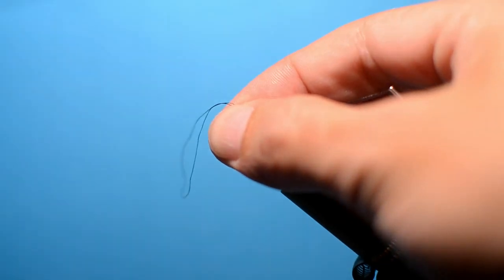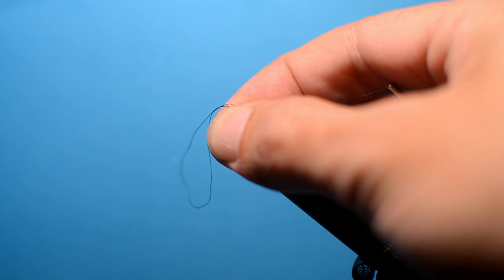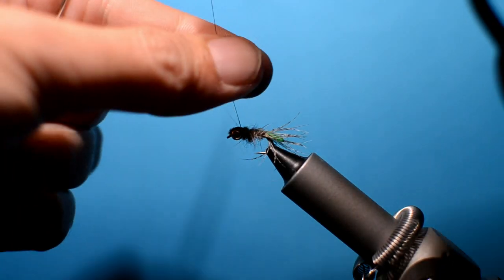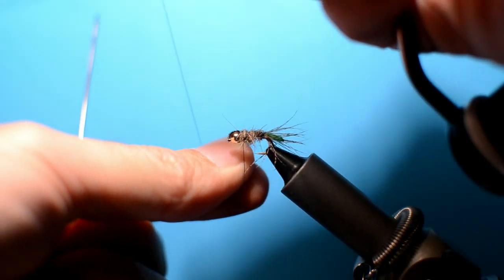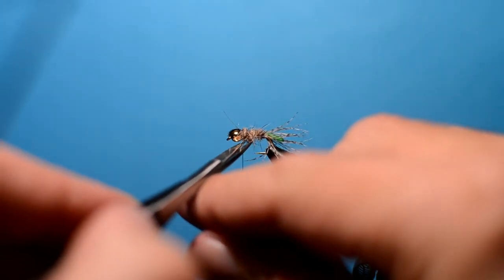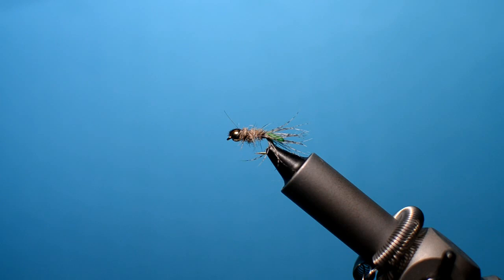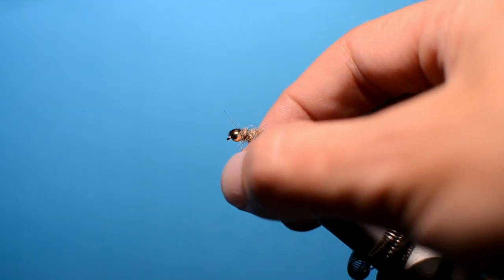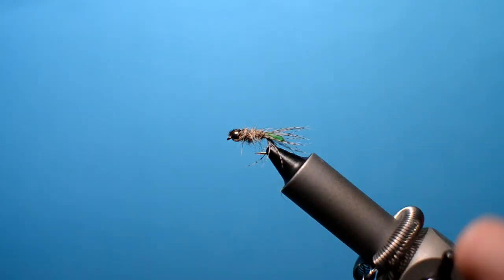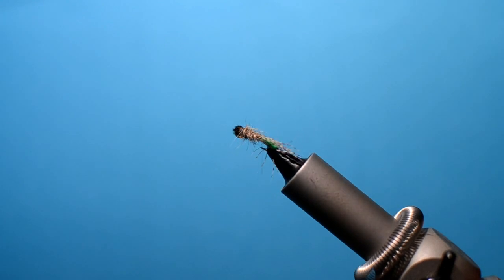If you use the tool or your fingers, when you get the loop, little bit of varnish, pull it through. Drop it down, trim it off. And that is pretty much a nice scruffy looking Peeping Caddis, or Peeping Caddis variant.